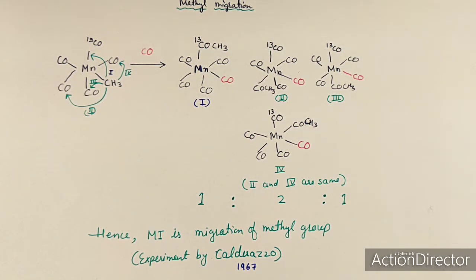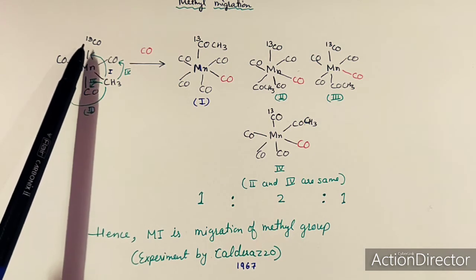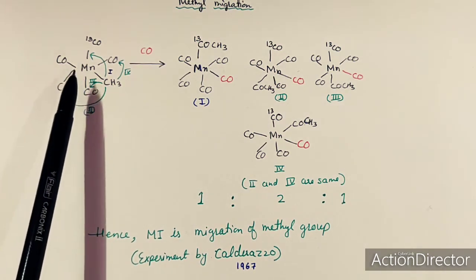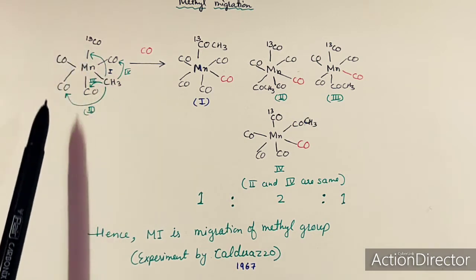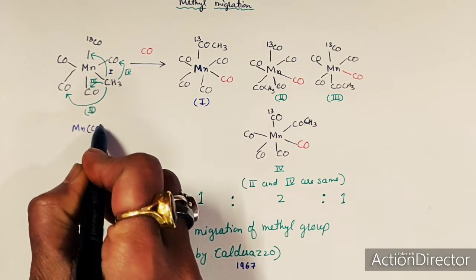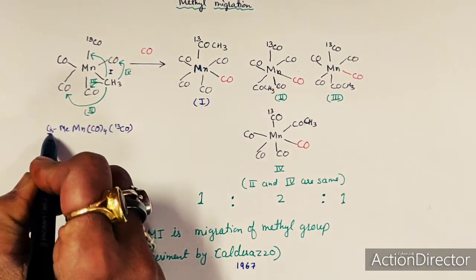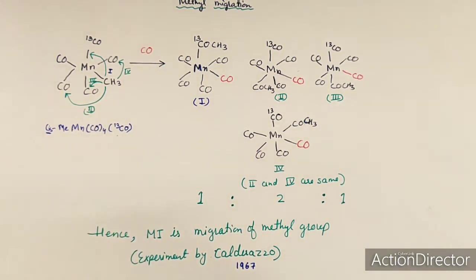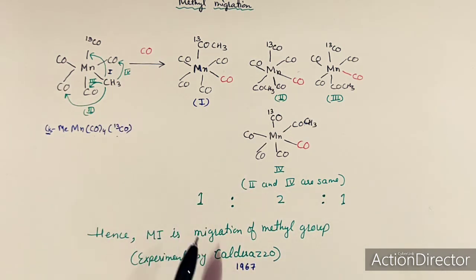In this experiment, Calderazzo used a manganese complex where one of its carbonyl groups is labeled with ¹³C. The compound is CH₃Mn(CO)₄(¹³CO), where the methyl group and the ¹³CO-labeled carbonyl are in the cis position to each other.